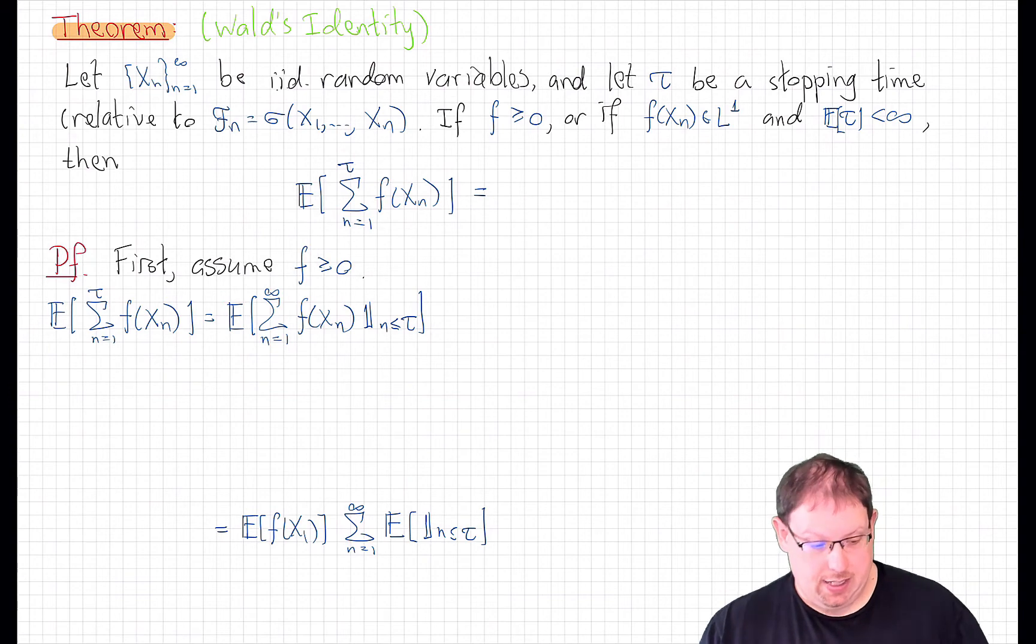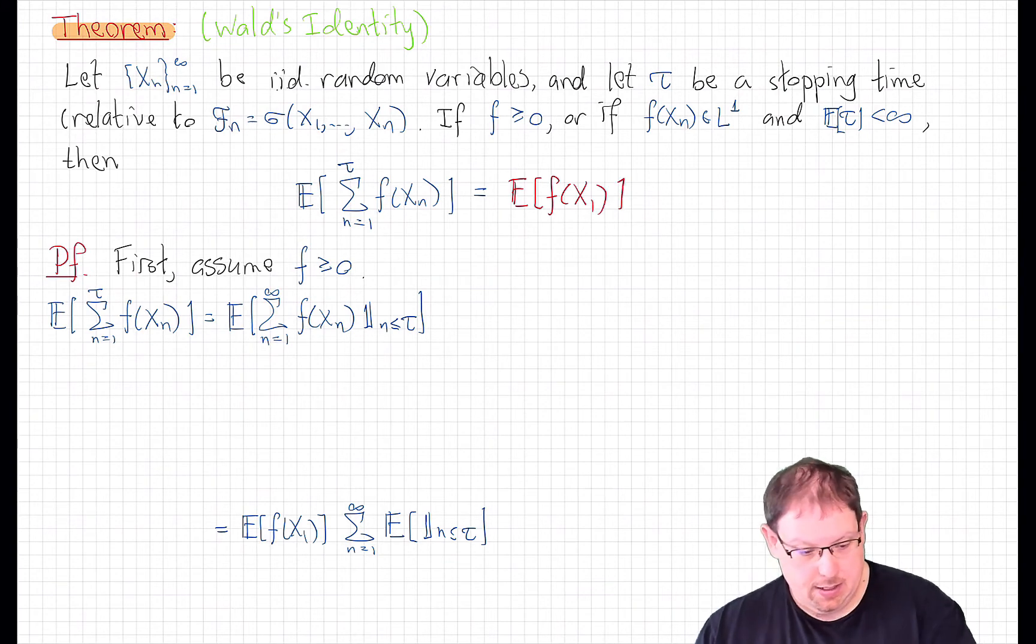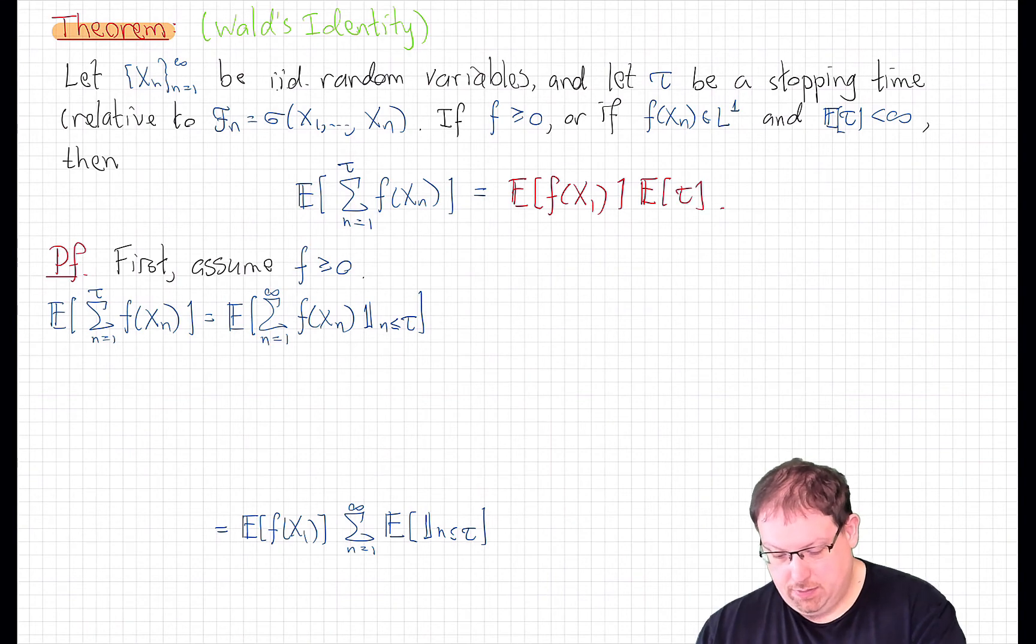And it works out exactly as if tau were a deterministic time, which means the expected value of f at xn for any n times the expected value of tau. That's Wald's identity, which holds true for any stopping time under these conditions.